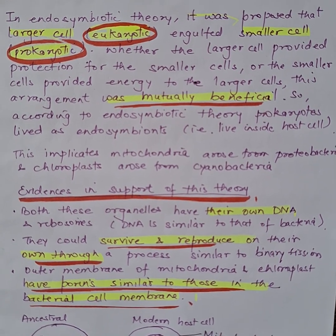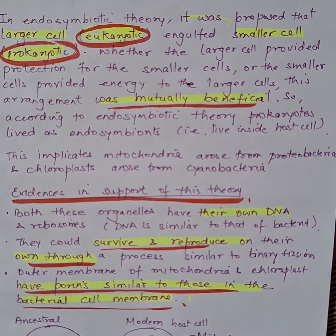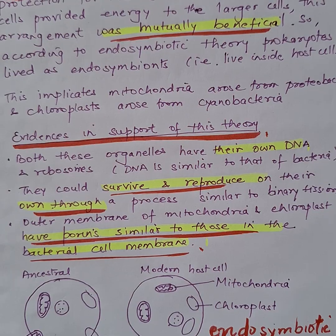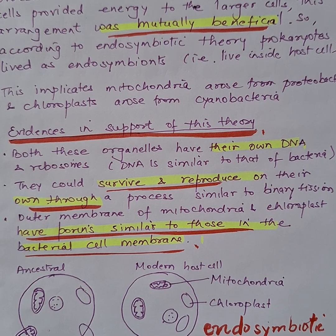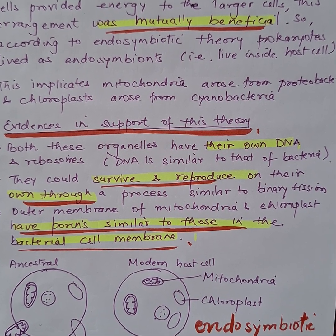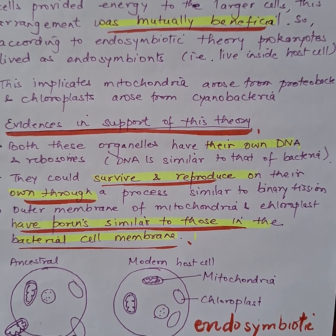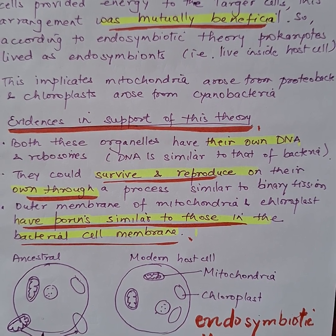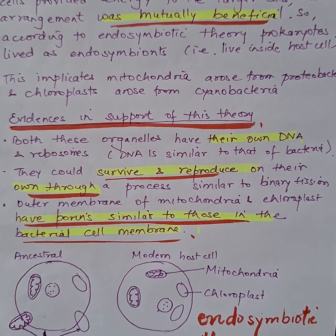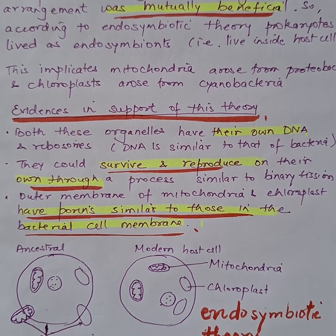This implicates that mitochondria arose from proteobacteria and chloroplasts arose from cyanobacteria. As evidence, both organelles have their own DNA and ribosomes similar to bacteria, they survive and reproduce on their own through a process similar to binary fission, and they have porins in the outer membrane, which is also similar to bacterial cell membranes.